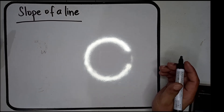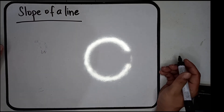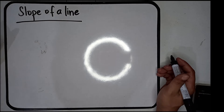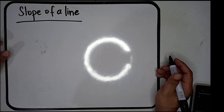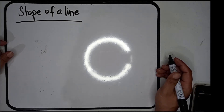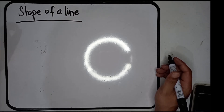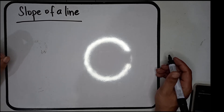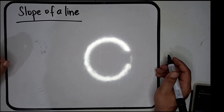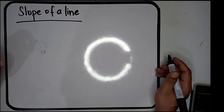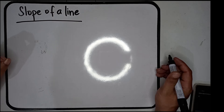This time let's talk about slope of a line. Basically, slope of a line describes the behavior of a line — how fast the line moves forward as it goes upward, or how fast a line goes upward as it moves forward.